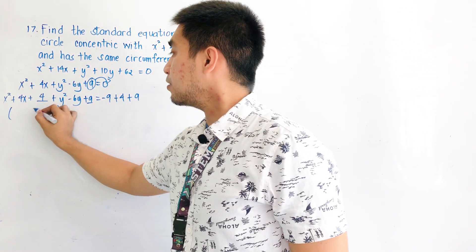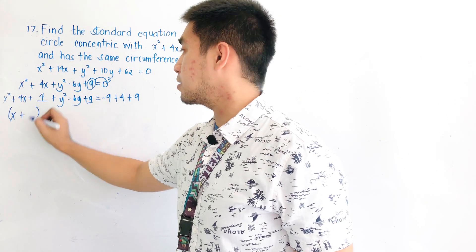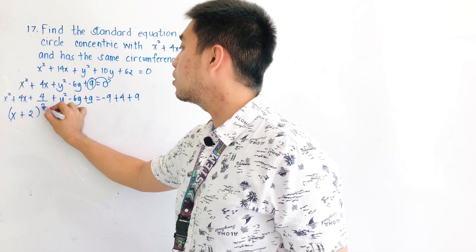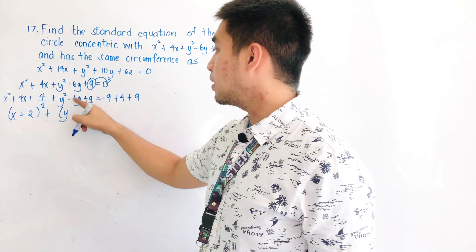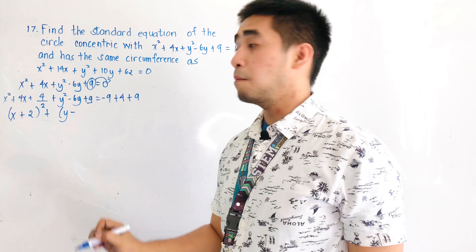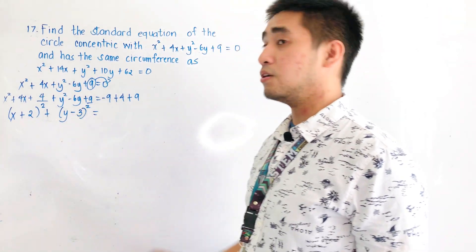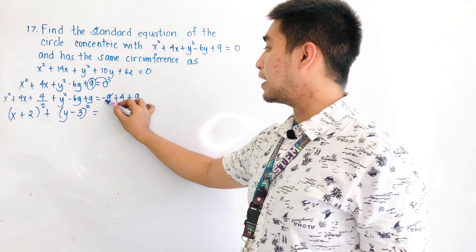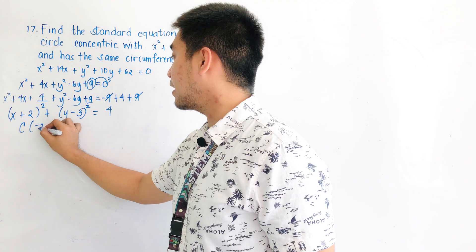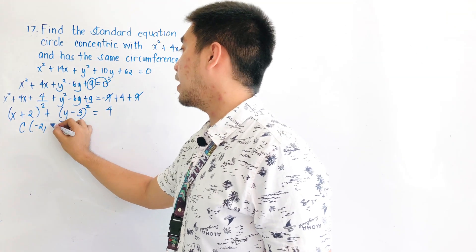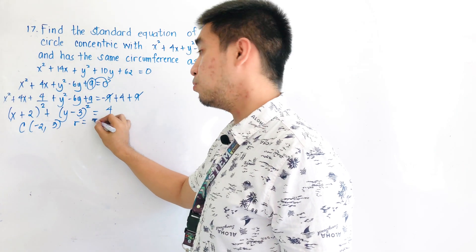Factoring out, we get (x + 2)² + (y - 3)² = 4. The center is located at (-2, 3) and the radius is equal to 2.